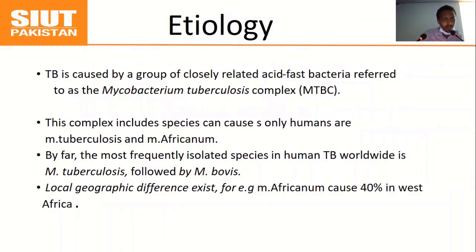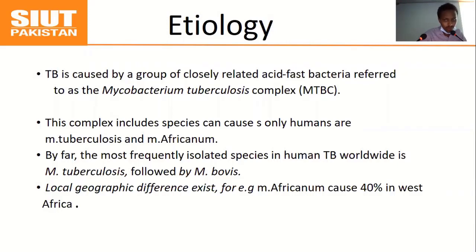Regarding TB etiology, TB is caused by a group of closely related acid-fast bacilli referred to as the Mycobacterium tuberculosis complex. This complex includes species that can cause disease only in humans, such as Mycobacterium tuberculosis and Mycobacterium africanum. The most frequently isolated species worldwide is Mycobacterium tuberculosis. Local geographical differences exist — for example, Mycobacterium africanum is more common in West African countries, accounting for around 40 percent.